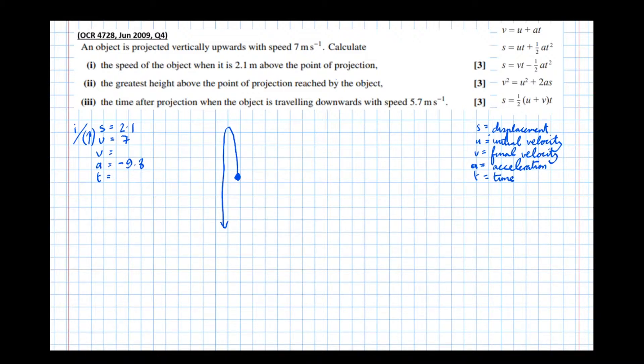Right, so let's have a look now at all the equations. We've got all the information being given down on paper. Let's have a look at which equation allows us to find the velocity. So v equals u plus at. Well, we need v, but we haven't got t, so it's not going to be that equation.